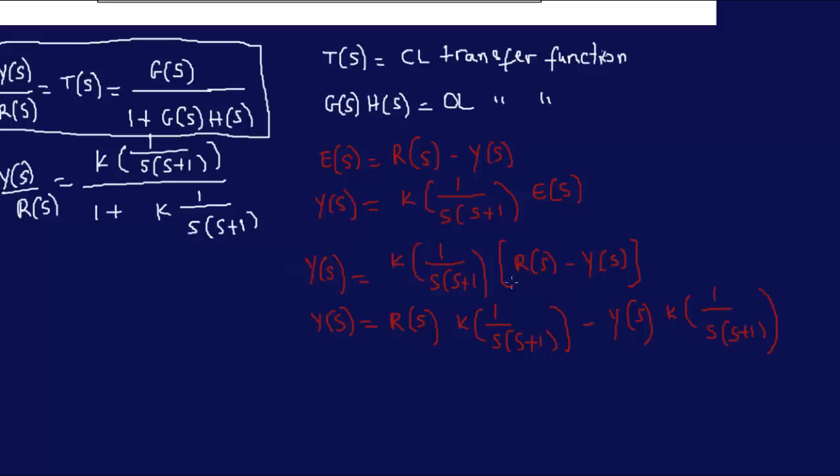Okay. So, now we have a Y of S here and we have another Y of S here. If we put Y of S here, then it will be plus and I can take out Y of S. So, this is what I was going to do. We have 1 here and then if this comes on the other side, it would be plus K 1 over S, S plus 1.